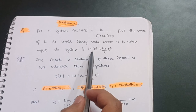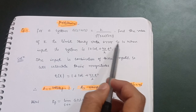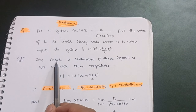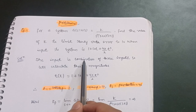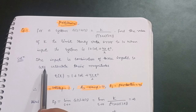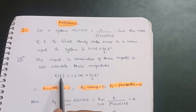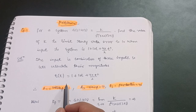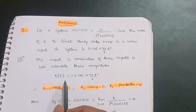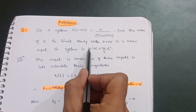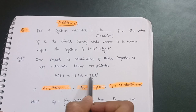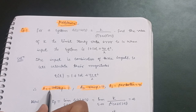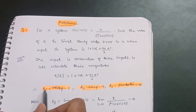When the input to the system is 1 + 10t + (40/2)t², you have to remember the input is a combination of three inputs. So r(t) = 1 + 10t + (40/2)t². Let us calculate their magnitudes.